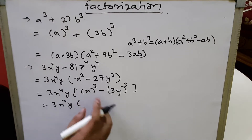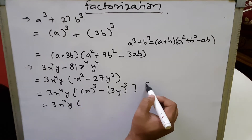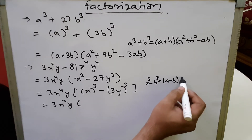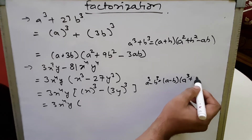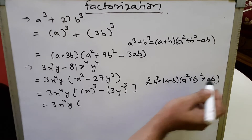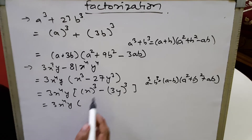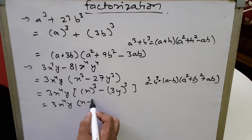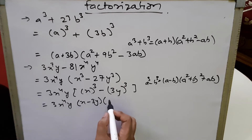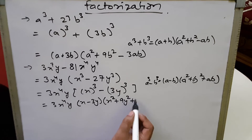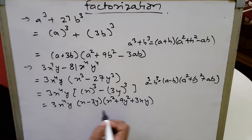We write x³ as (x)³ and 27y³ as (3y)³. Applying the difference of cubes identity a³ - b³ = (a-b)(a² + b² + ab), where a = x and b = 3y, we get 3x⁴y(x - 3y)(x² + 9y² + 3xy). This is the factorized form.